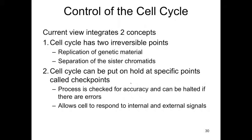We've considered the cell cycle itself and how mitosis fits into the scheme of things. But now the question is, how is the pace of the cell cycle controlled? Because as we've already learned, it can move rather fast, or it might take a whole year for a cell to complete the cell cycle. This is a very active area of research, and the current view integrates two primary concepts.